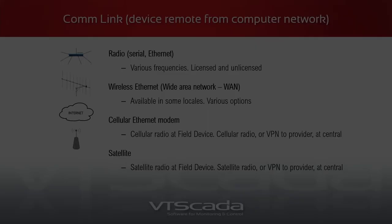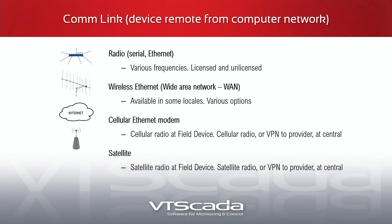Wireless types include radio, wireless Ethernet, cellular Ethernet modems — very common now as monthly cellular costs have gone down — and satellite connections. We rarely see satellite; it's mainly used for offshore installations or ships in remote areas like the Arctic.